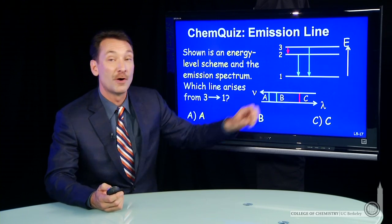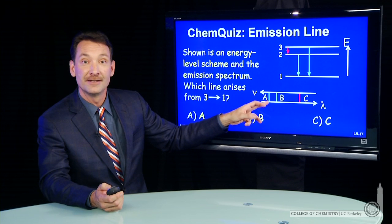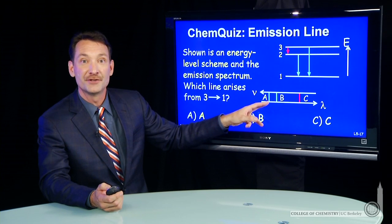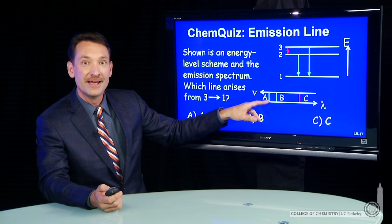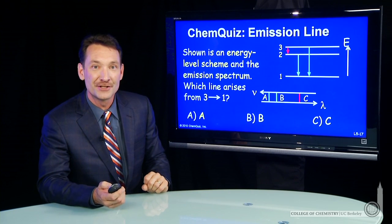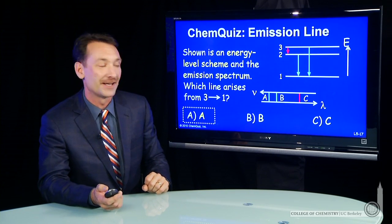The other transition from three to one is the highest possible for this system. So three to one would give you a line at A. A here, the highest energy transition is the highest frequency, is the correct answer.